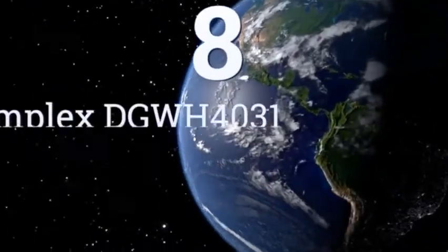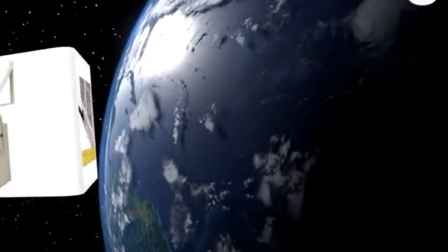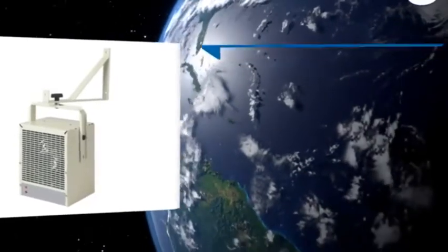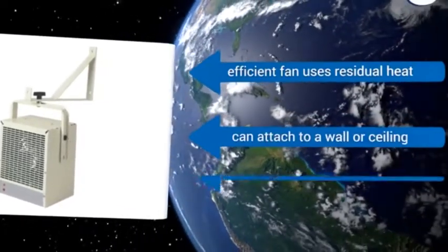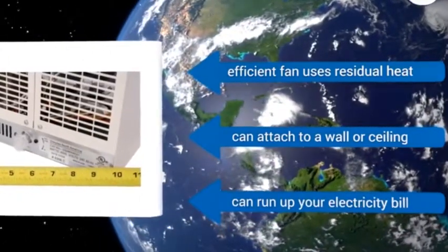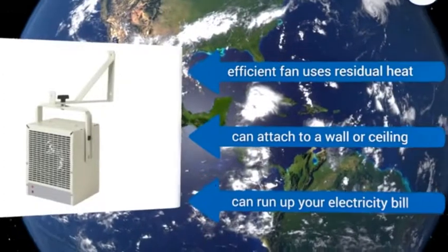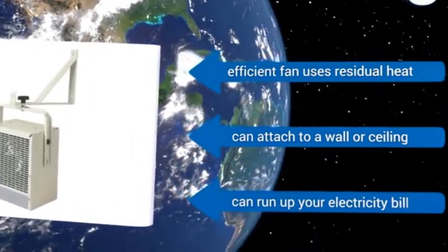Coming in at number 8 on our list, with an easy-to-install mounting bracket and a swiveling arm, the Dimplex DGWH 4031 brings the heat to you, so you can stay warm no matter where you're working. The automatic temperature control helps to maintain a consistent and comfortable level in your space. Its efficient fan uses residual heat and you can attach it to a wall or a ceiling. However, it can run up your electricity bill.